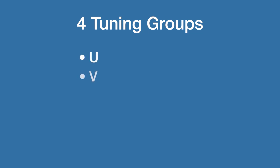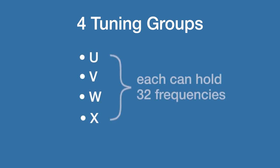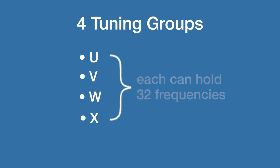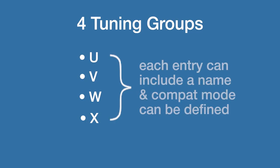You probably know that the four tuning groups available are U, V, W, and X, each able to hold 32 frequencies. We've also added the ability to name each entry and define the desired compat mode for each as well.